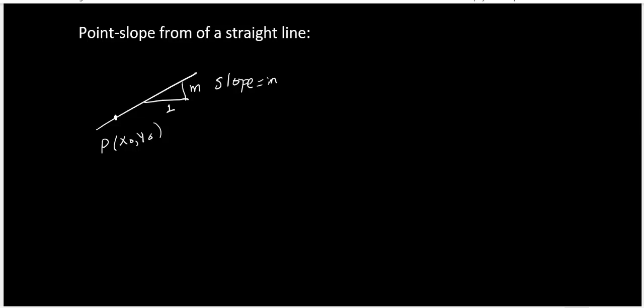Then the equation of this straight line would be y equals y naught plus m of x minus x naught, and this equation is known as point slope form of the straight line.